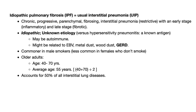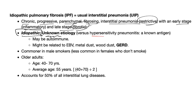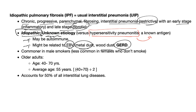Idiopathic pulmonary fibrosis is the same thing as usual interstitial pneumonia — chronic, progressive, parenchymal fibrosis and interstitial pneumonia, restrictive, with an early stage of inflammation and a late stage of fibrosis. It's idiopathic, unknown antigen. Contrast that with hypersensitivity pneumonitis, which has a known antigen. This could be autoimmune, and it might be related to EBV, metal dust, wood dust, or even gastroesophageal reflux disease.